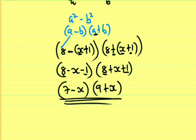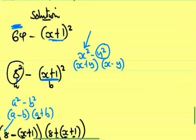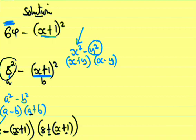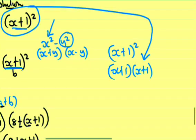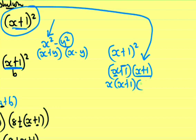Now let's use an alternative method to factorize. First, let's remove the bracket by expanding (x+1)². (x+1) times (x+1).